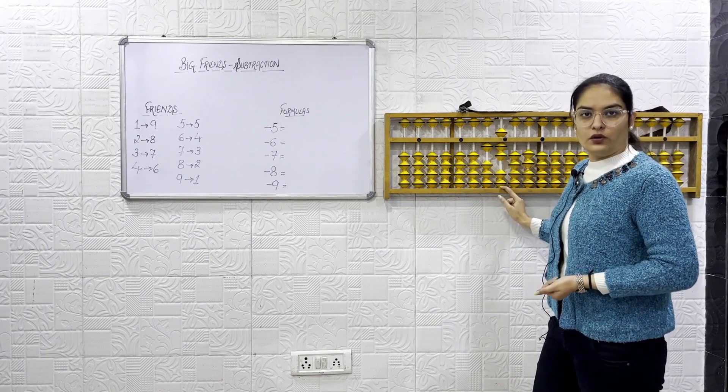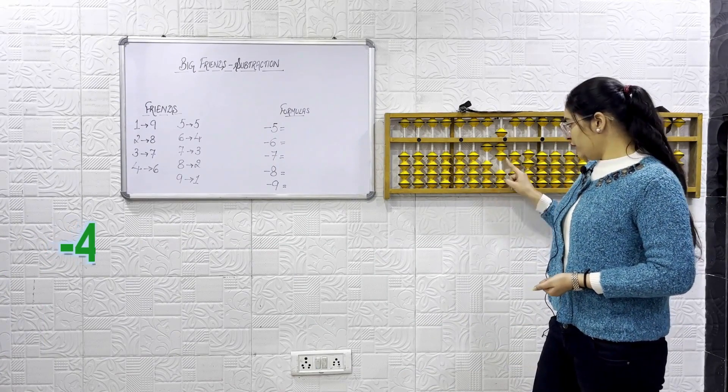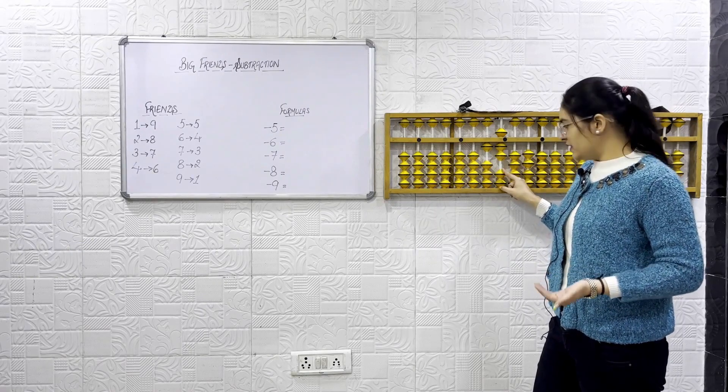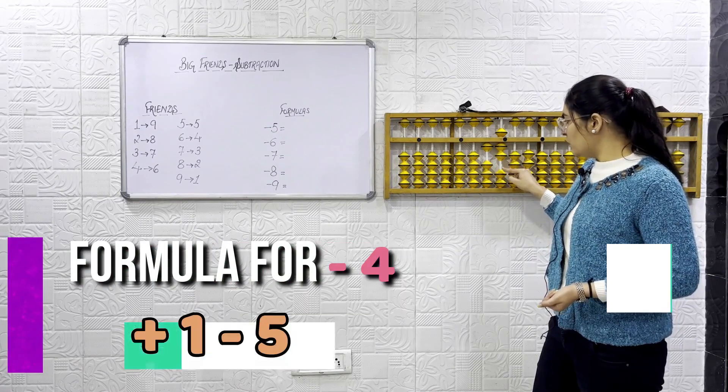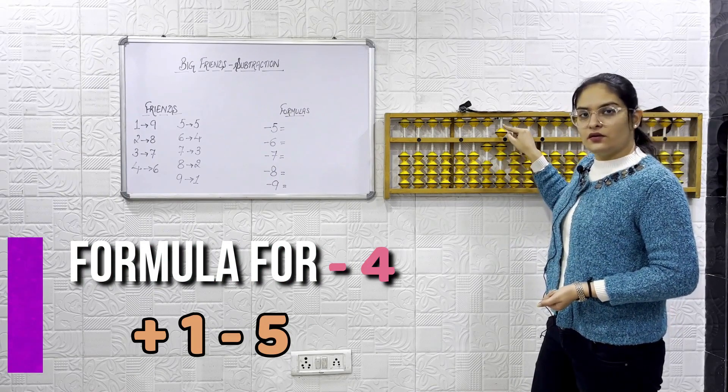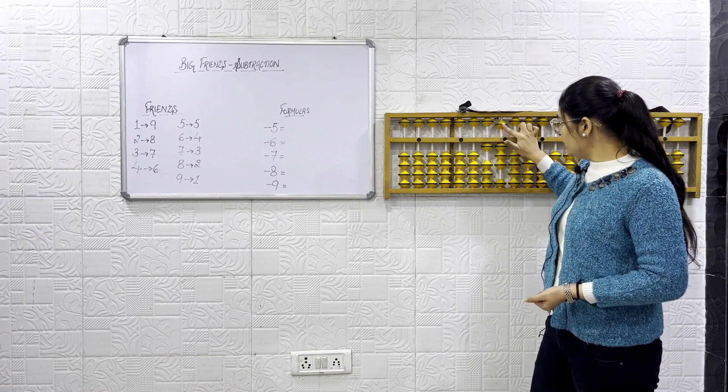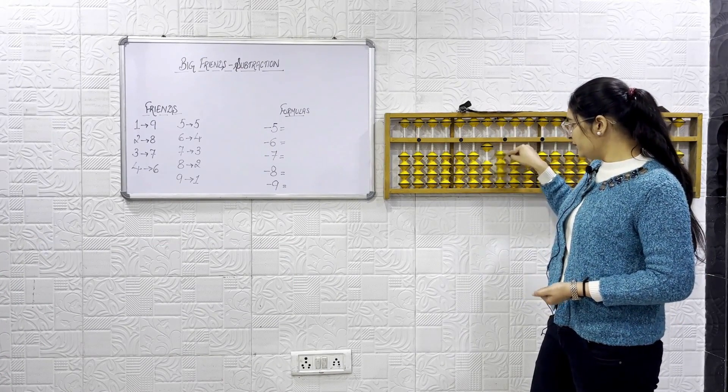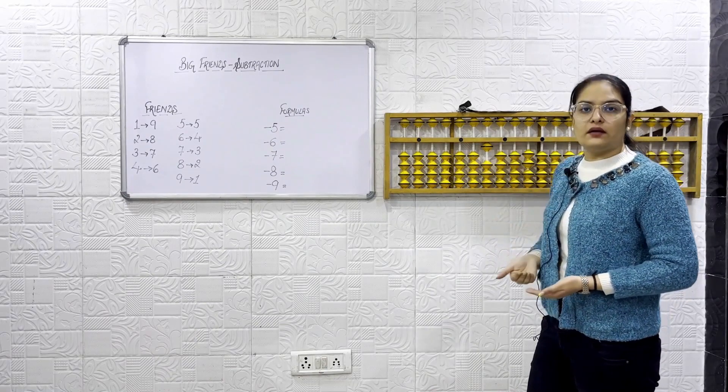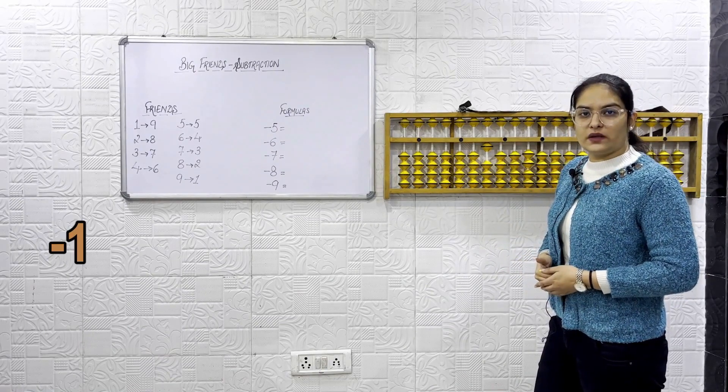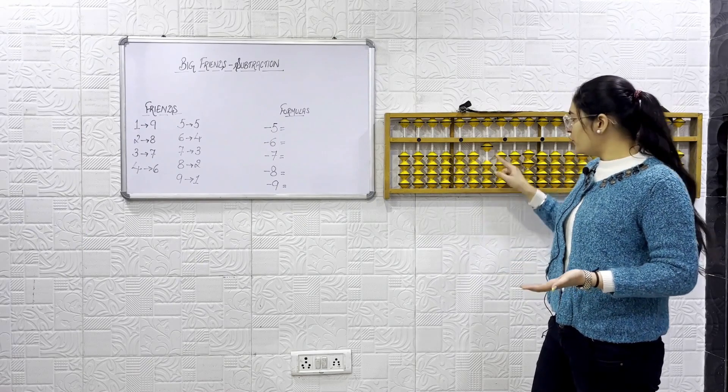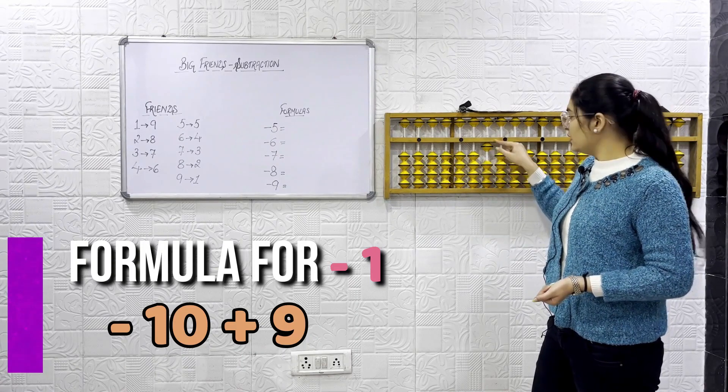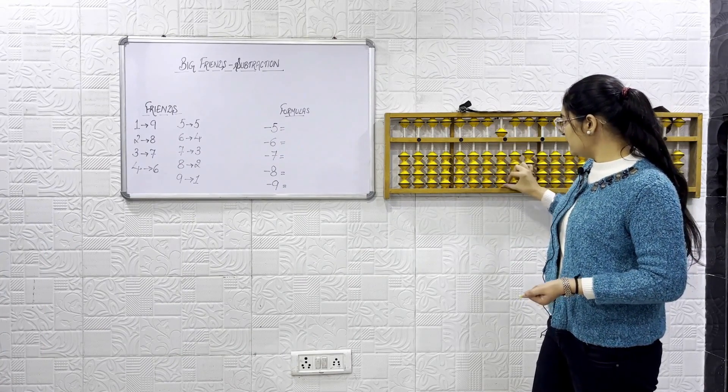Minus 4. You want to do formula for minus 4? Can we use the direct method? No. Small friends. Yes. Formula will be plus 1 minus 5. Minus 3. We get to minus 3 already. Minus 1. What is the formula for minus 1? We have learned in the previous class. Formula for minus 1 will be minus 10 plus 9.